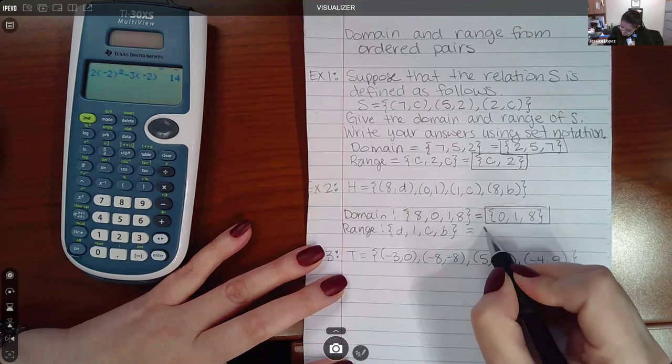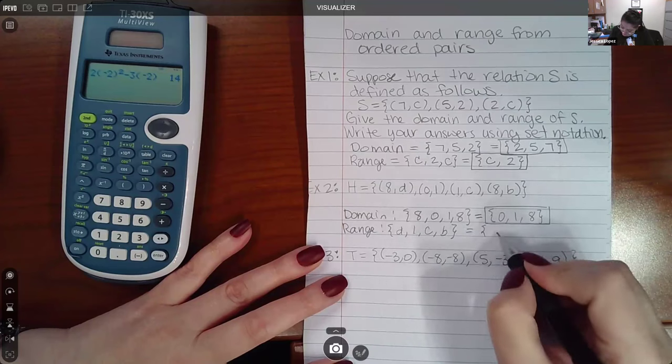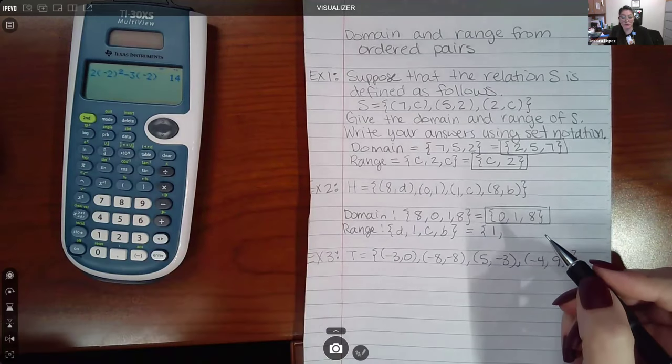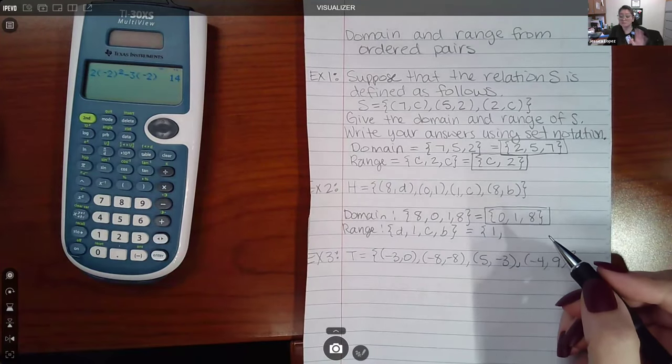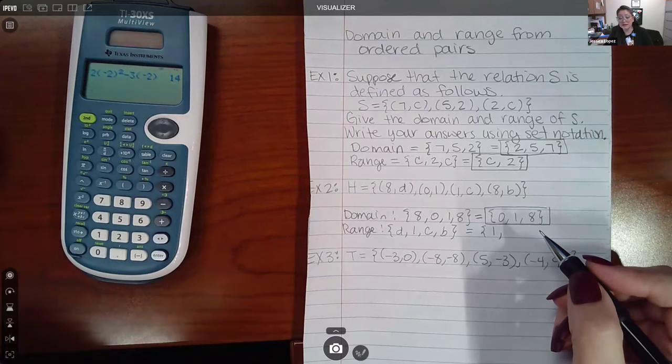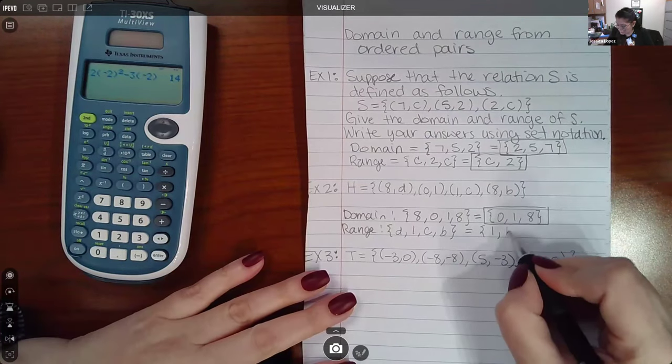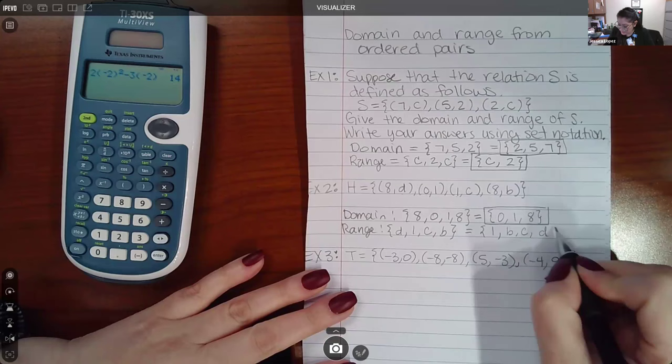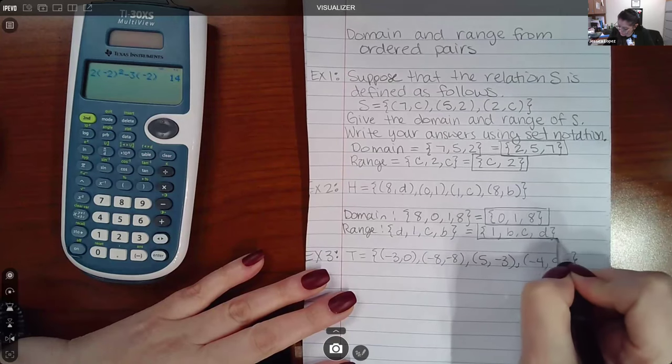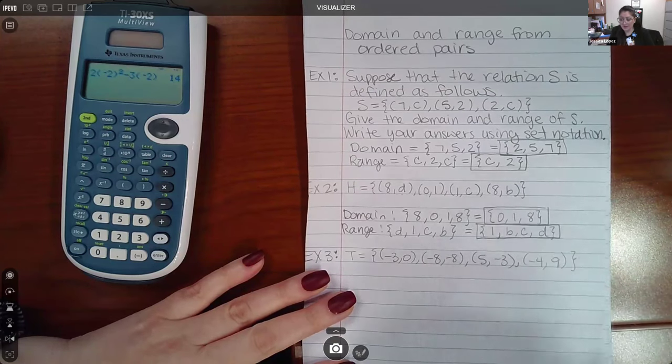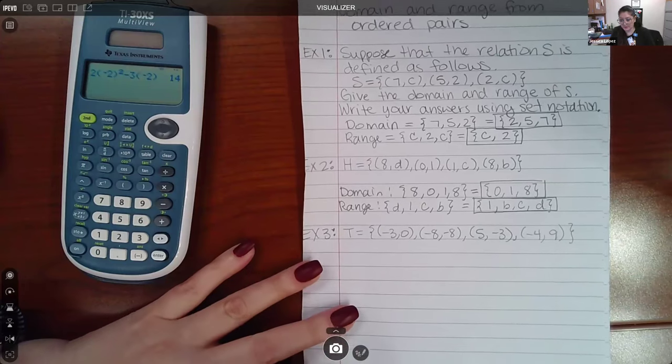Now there's only one numerical value, so I'm gonna write that one first. It doesn't matter whether you put the numbers first or the numbers last. The letters, however, I am gonna put them in order: B, C, D. And this would be the final formal set for that range.